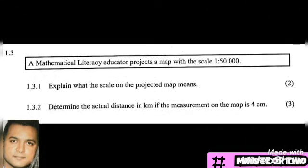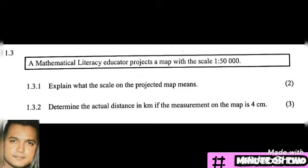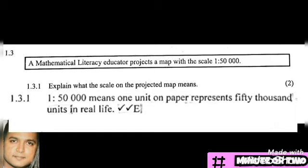Next, section 1.3 provides additional information: a mathematical literacy educator projects a map with a scale of 1:50,000. The 1 represents the map and 50,000 represents the actual ground distance. Question 1.3.1 asks us to explain what the scale means. Using our knowledge of scales, 1:50,000 means one unit on the map represents 50,000 units on the ground or in actual life.